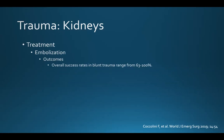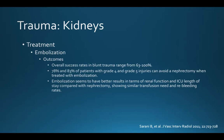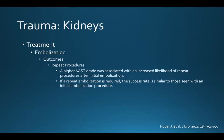The success rates for embolization are high. Overall success rates in blunt trauma range from 63 to 100%. About 80 to 85% of patients with grade 4 and grade 5 injuries can avoid nephrectomy when treated with embolization. Embolization shows better results in terms of renal function and ICU length of stay compared with nephrectomy, with similar transfusion and re-bleeding rates. Success rates are higher in centers with more embolization experience. Some patients will require repeat procedures, and a higher injury grade is associated with increased likelihood of repeat embolization, though success rates for repeat procedures are similar to initial ones.